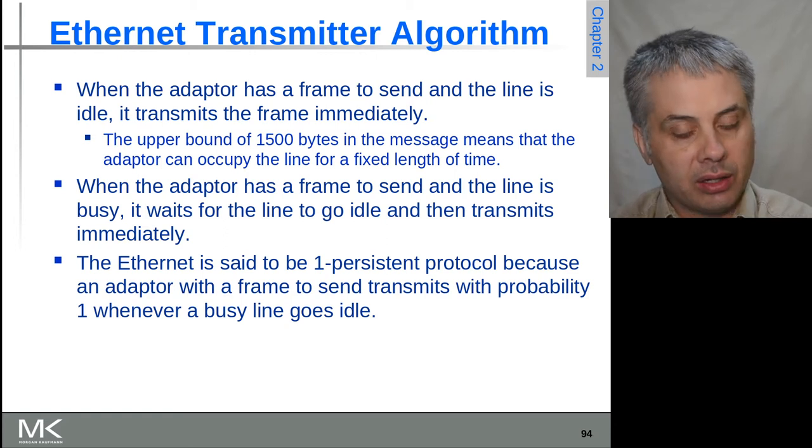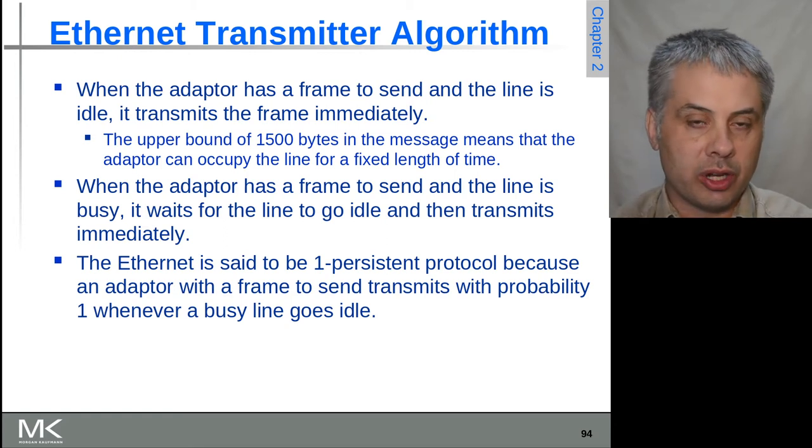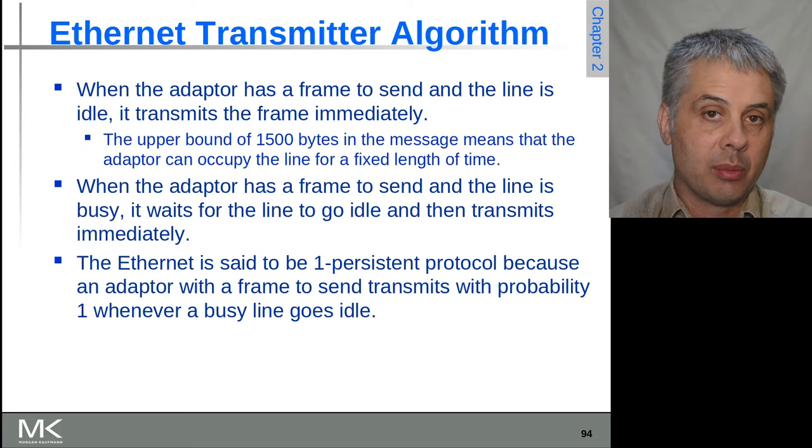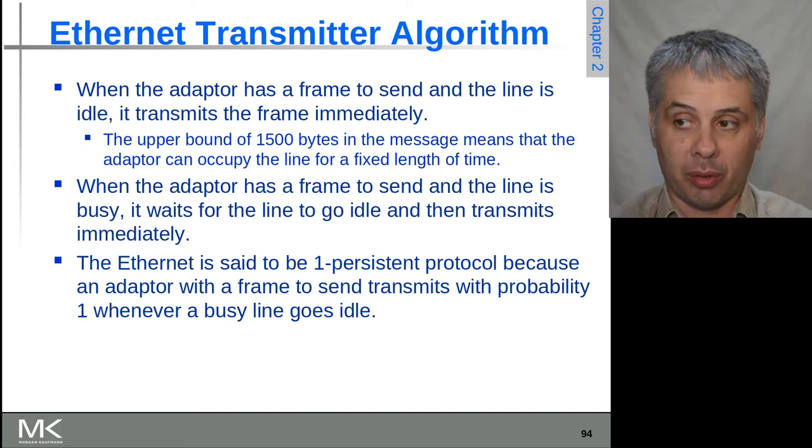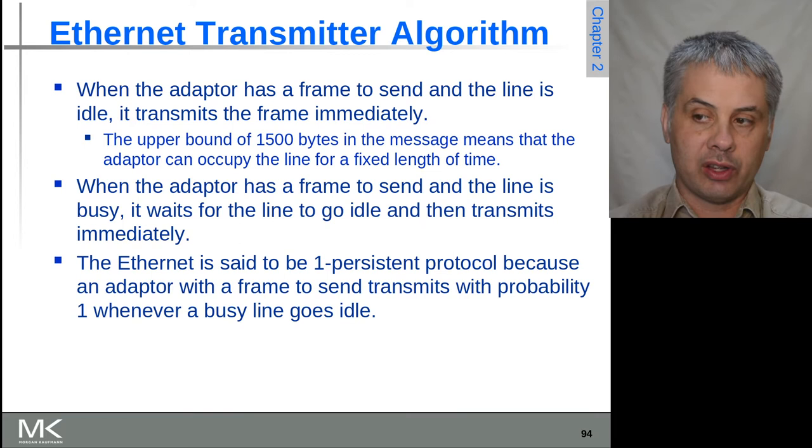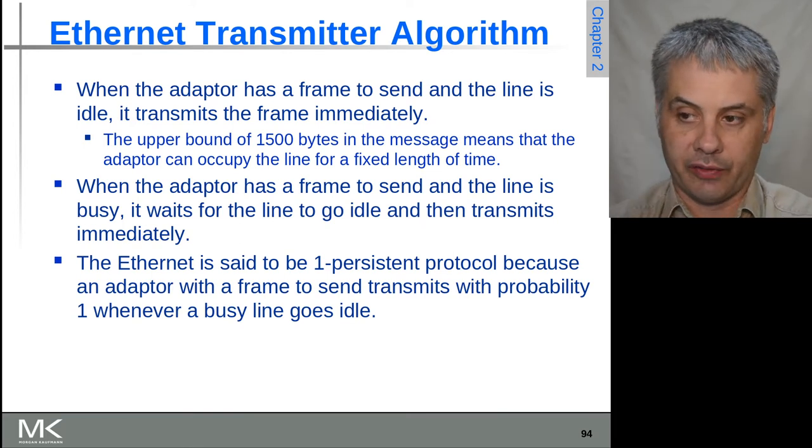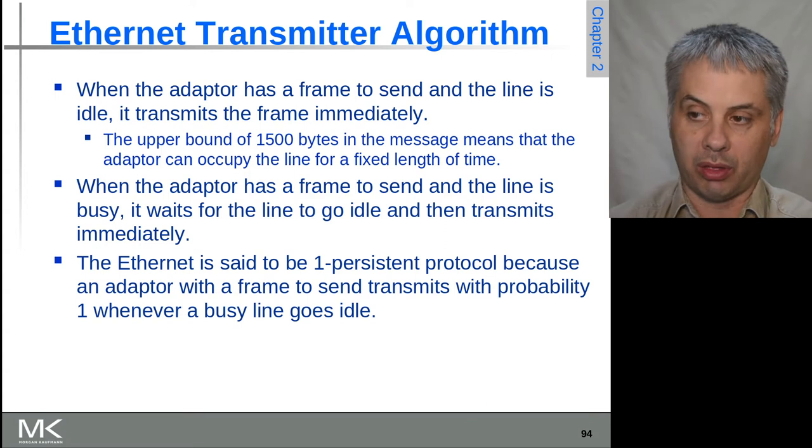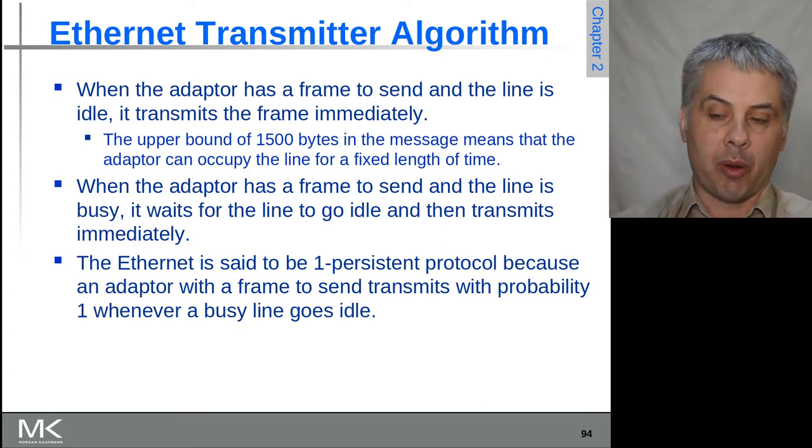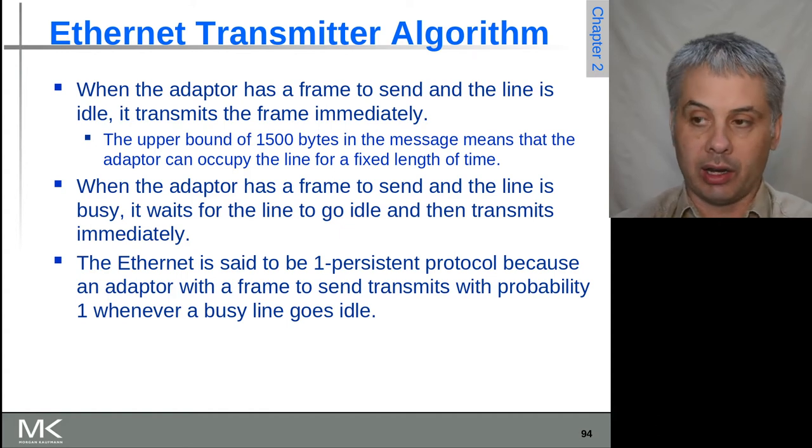If, on the other hand, an Ethernet transmitter wishes to send a frame but the Ethernet is currently busy because somebody else is already sending a frame, it will wait for the line to go idle and then immediately start to transmit. For this reason, it's called a 1-persistent protocol, because with probability one it will attempt to send a frame as soon as a busy line goes idle.